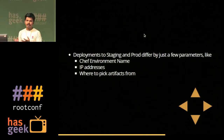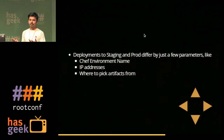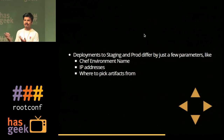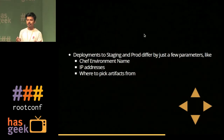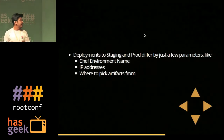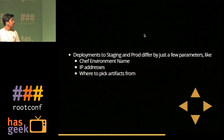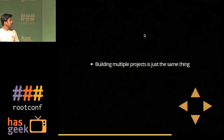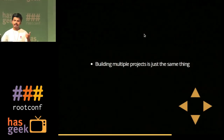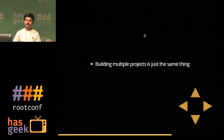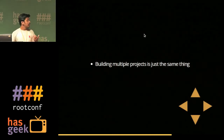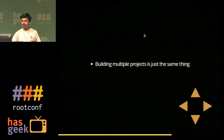When your production and staging deployments differ by only a few parameters — like a Chef environment name, a few IP addresses, where to pick the artifact from, or what artifact to deploy — you can create a template and have these things as parameters when you create the pipeline.